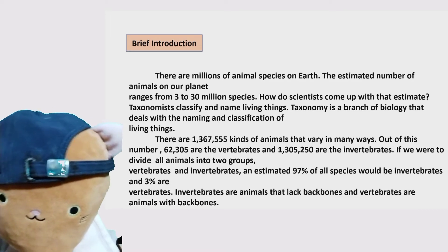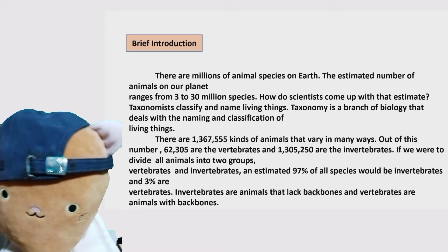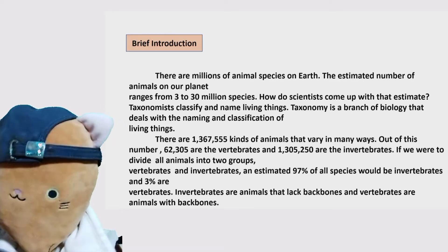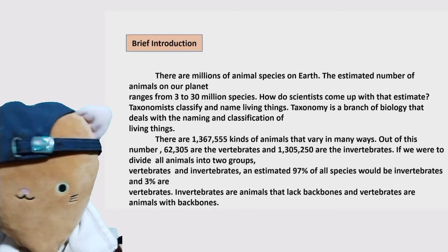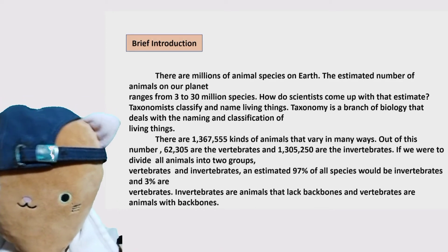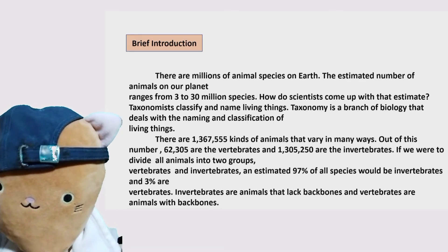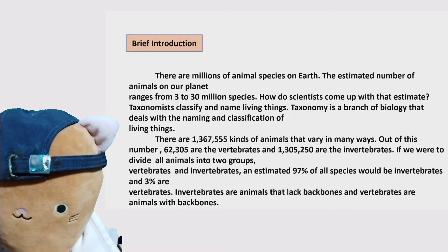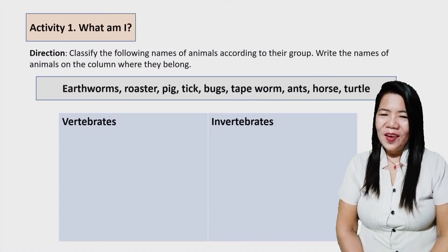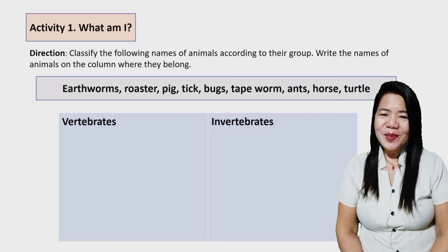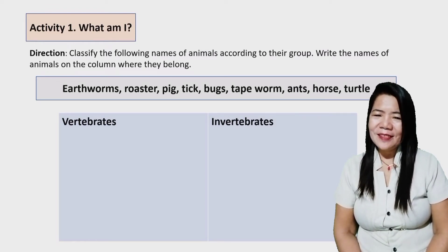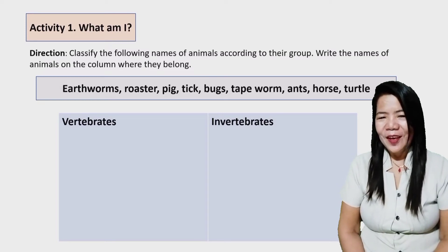Out of this number, 62,305 are vertebrates and 1,305,250 are invertebrates. If we were to divide all animals into two groups — vertebrates and invertebrates — an estimated 97% of all species would be invertebrates and 3% are vertebrates. Invertebrates are animals that lack backbones, and vertebrates are animals with backbones. Amazing, isn't it? By the way, I have to go now. Thank you so much, Ani Maria — we learned many things from you.